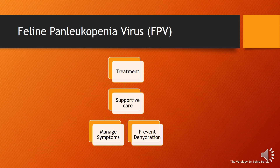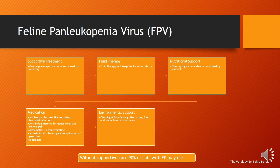Treatment is through supportive care to manage symptoms and prevent dehydration. With proper treatment, cats may recover as early as three weeks after diagnosis, and some cats may clear the infection on their own within four to six months. There is no cure for feline panleukopenia as it is a viral disease, but supportive care can help manage symptoms and speed up recovery.